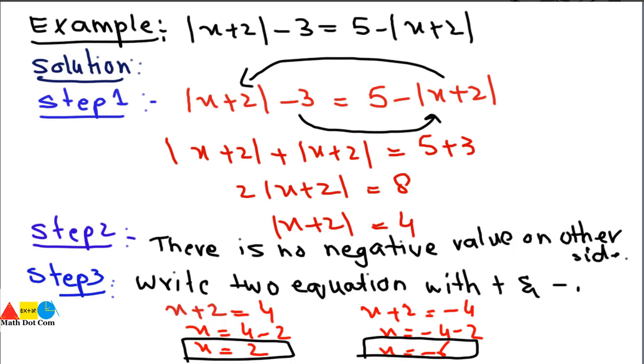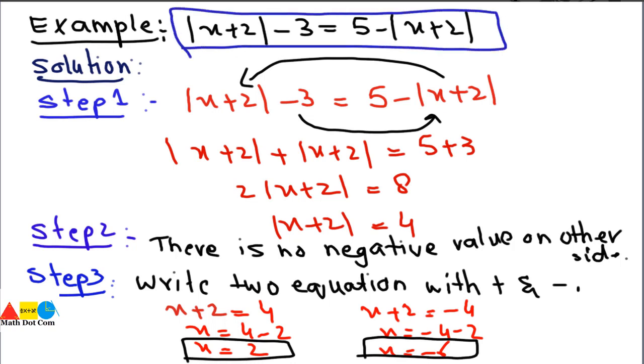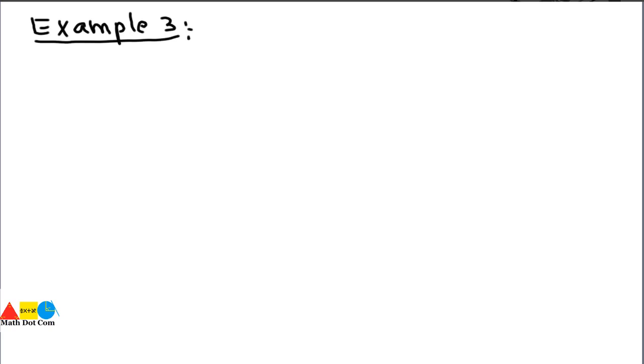You can check both solutions by substituting them back into the original equation to verify that left-hand side equals right-hand side. In our first two examples we considered: a single absolute value on one side, then absolute values on both sides with the same expression. In Example 3, we will see absolute values on both sides but with different expressions.